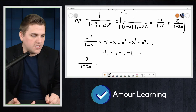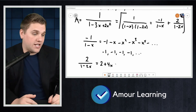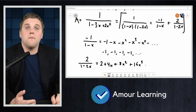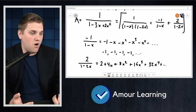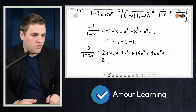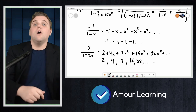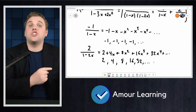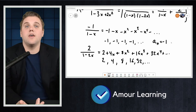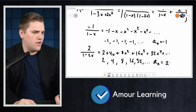Likewise, 2 over (1 − 2x) expands as 2 + 4x + 8x² + 16x⁴ + …, which generates the sequence 2, 4, 8, 16, and so forth. We can give a closed formula for the nth term of each sequence: the first is a_n = −1, and the second is a_n = 2^{n+1}.